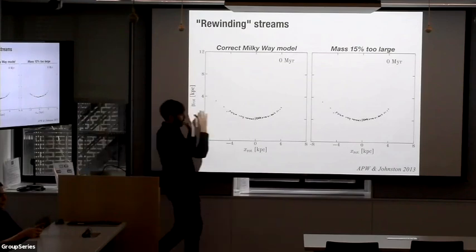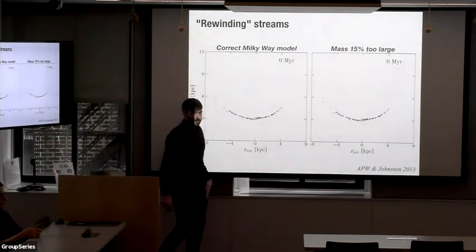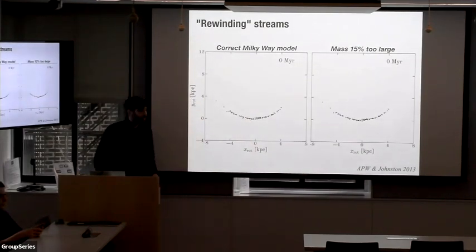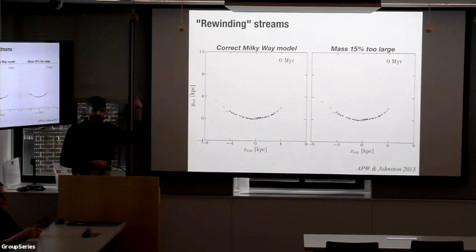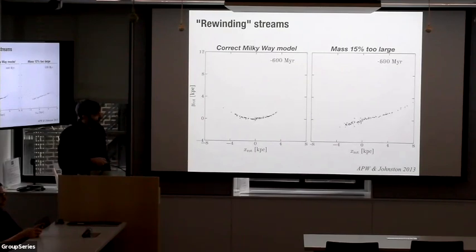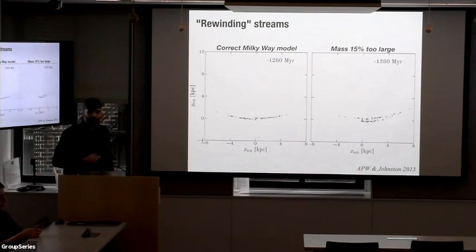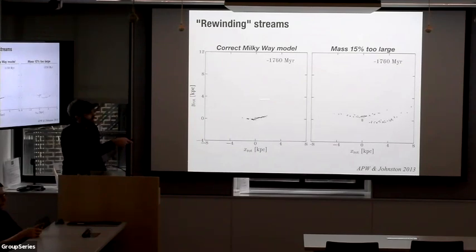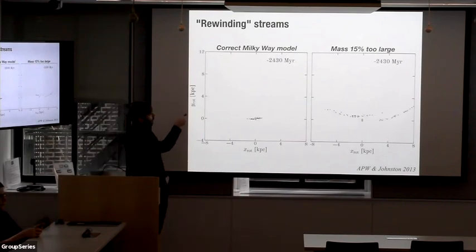What that means is: if we observed a bunch of stars in the stream today and got their positions and velocities, then integrated their orbits backwards in time using a trial mass distribution — if we got that distribution correct, if we got the model of the Milky Way correct — all of those small deviated orbits should rewind back into the progenitor system. Here in the correct model they suck back into the progenitor, and in a wrong model, crazy things happen.